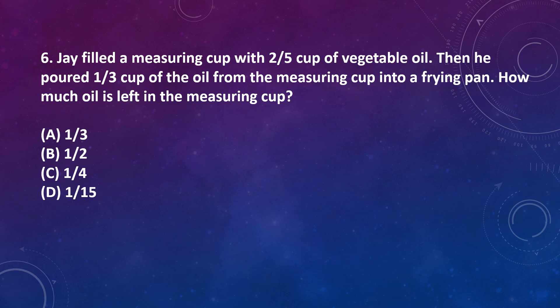Question number 6: Jeff filled a measuring cup with 2 by 5 cup of vegetable oil. Then he poured 1 by 3 cup of the oil from the measuring cup into a frying pan. How much oil is left in the measuring cup? Option A: 1 by 3, Option B: 1 by 2, Option C: 1 by 4, Option D: 1 by 15.